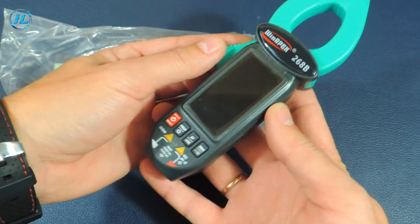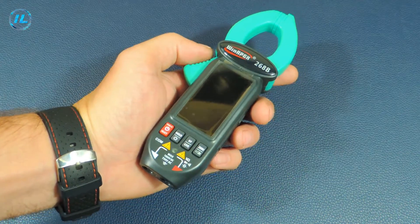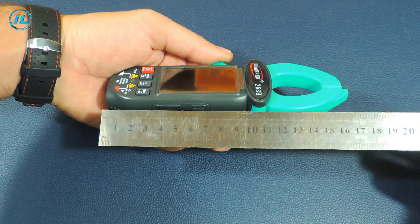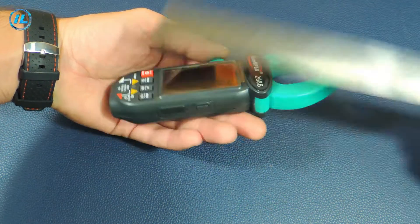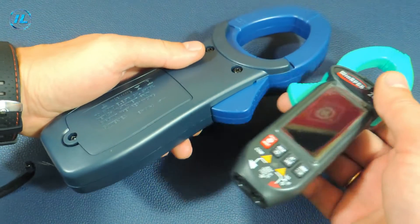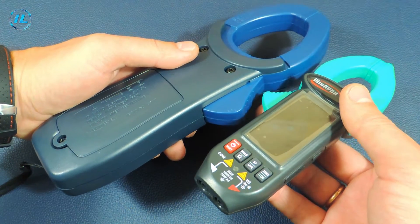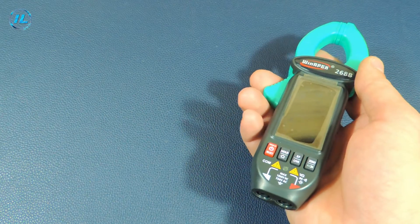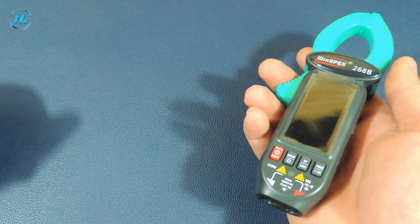And here are the current ticks themselves. WinAPEX current pliers are very compact, their length is only 17 cm. If you compare them with other current ticks, for example, like this, then these look very small. But thanks to such a small size, they are convenient to use, and they do not take up much space.